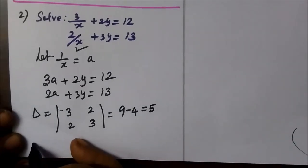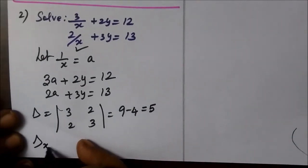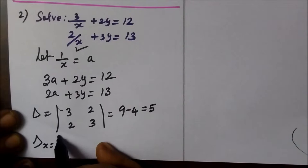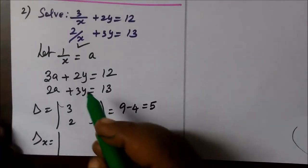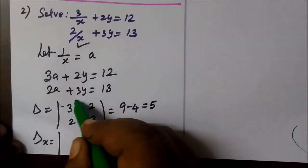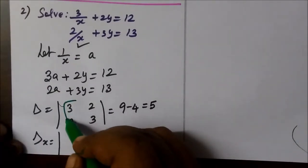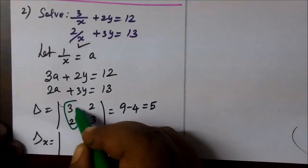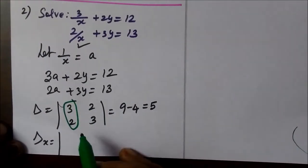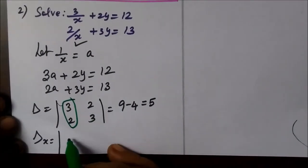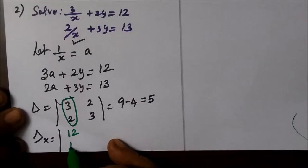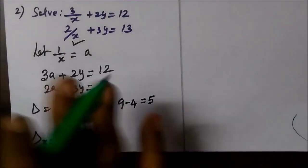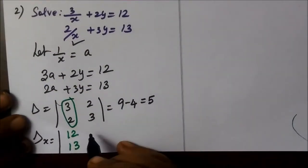What do we do? Del x is placed in the first column. Update the first column with the constant compared to the second column. Constant equals the second column.